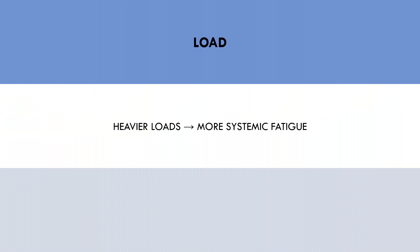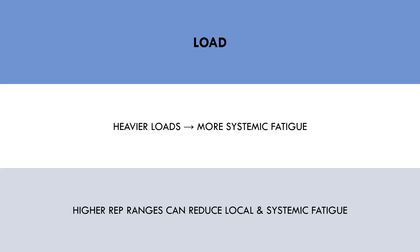The next factor that contributes to recovery capacity is the load used. Generally, heavier loads cause more local and systemic fatigue than lighter loads. However, with hypertrophy training we are almost always working in the 6 to 20 rep range, so the loading doesn't change too much. To limit systemic and local fatigue, trainees can use the higher end of these rep ranges for exercises where it is practical to do so.